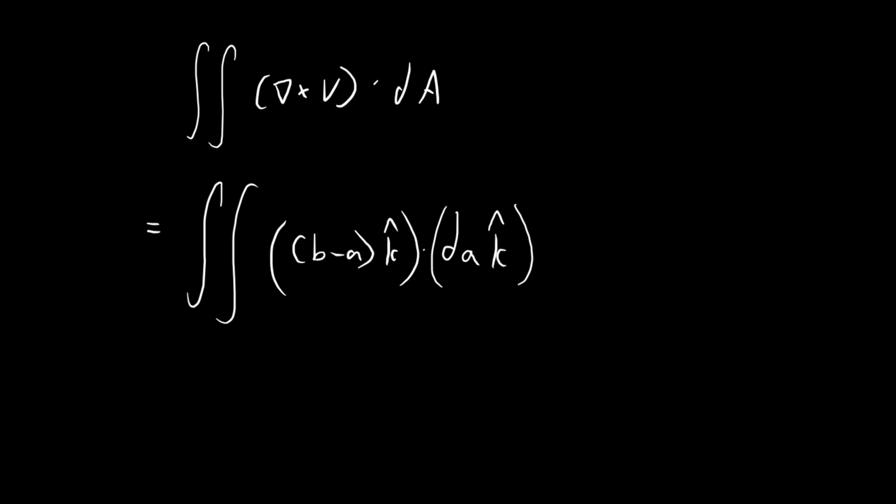And don't forget, this is going to be a dot product. So in the end, you have the k unit vector dot with the k unit vector. And then these two vectors are identical. They're both unit vectors. So you just get one. And of course, B minus A is just a constant. So I can just pull this out.